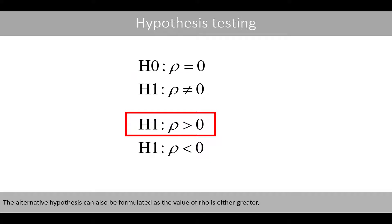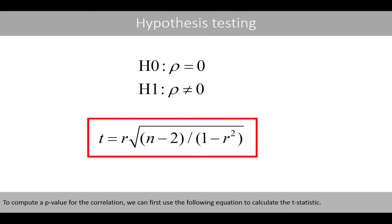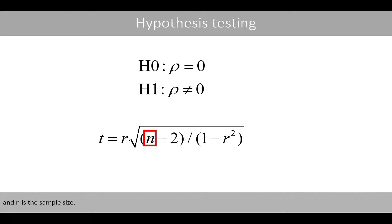The alternative hypothesis states that the correlation coefficient is not equal to zero, and can also be formulated as the value of rho being either greater or less than zero. To compute a p-value for the correlation, we can use the following equation to calculate the t-statistic, where r is the Pearson correlation coefficient estimated from the sample and n is the sample size.